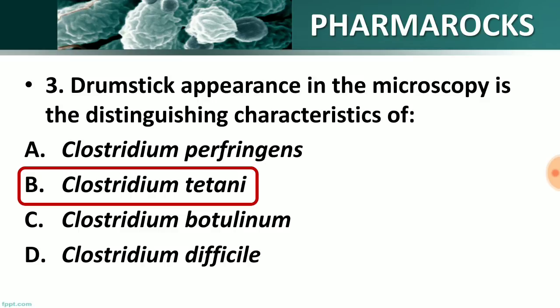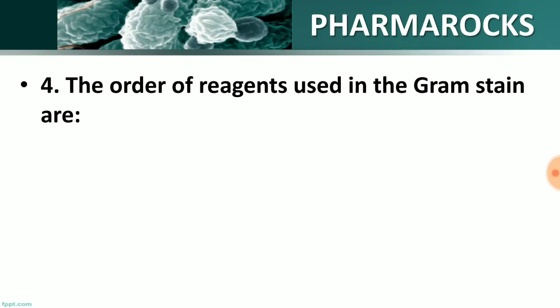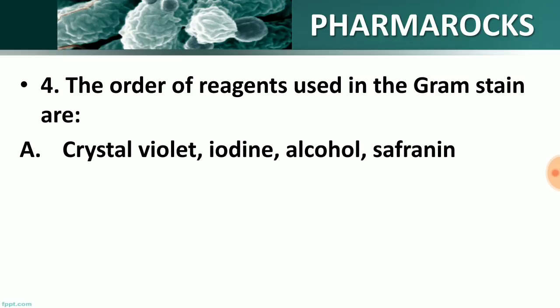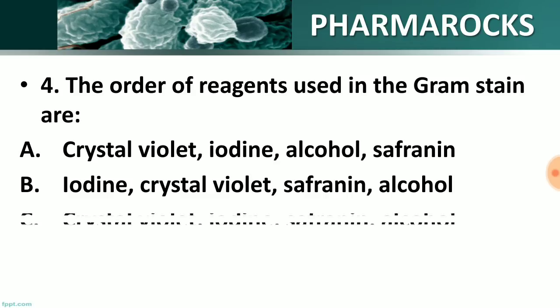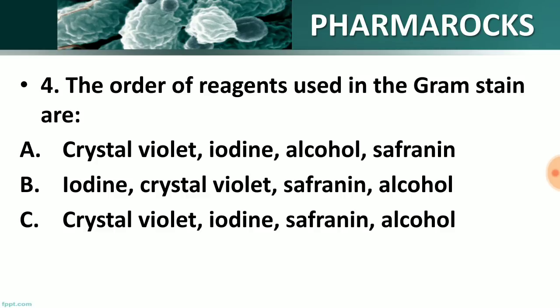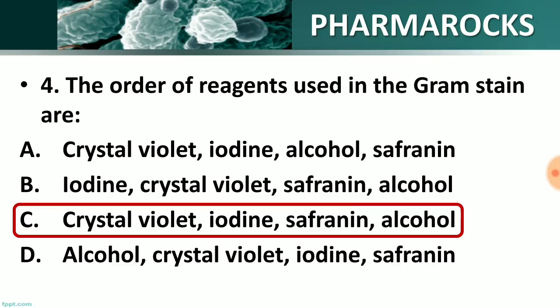Question number 4: The order of reagents used in gram stain are: A) crystal violet, iodine, alcohol, safranin; B) iodine, crystal violet, safranin, alcohol; C) crystal violet, iodine, safranin, alcohol; D) alcohol, crystal violet, iodine, safranin. The correct order of reagents in the gram staining process is: first crystal violet, then iodine, then safranin, and last alcohol — option C.